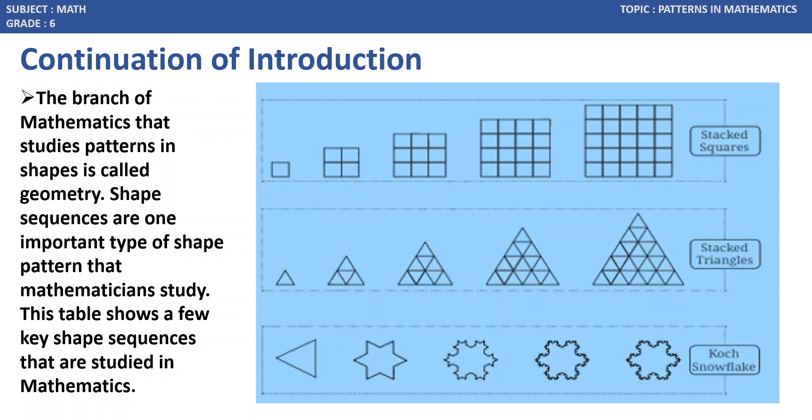Those shapes are stacked squares. Stacked squares are a group of squares. Here, the second picture we do have 4 squares. Square 1, square 2, square 3, square 4. The third one we do have 9. Similarly, fourth one we do have 16. Fifth one we do have 25.